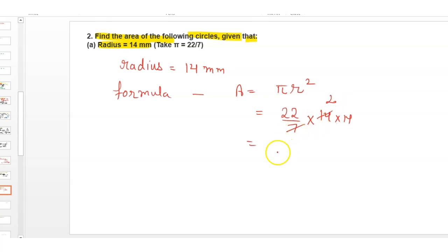7 into 14 gives 2, so 22 into 2 into 14 equals... 22 into 2 is 44, and 44 into 14 is 616 mm squared.